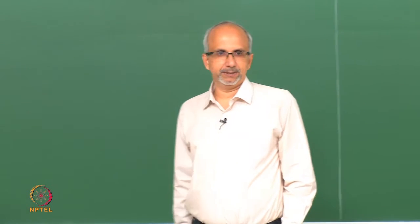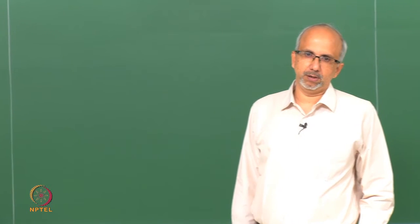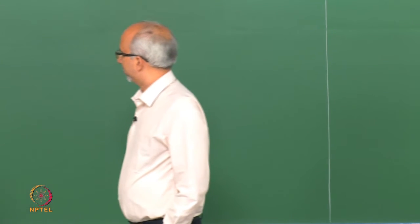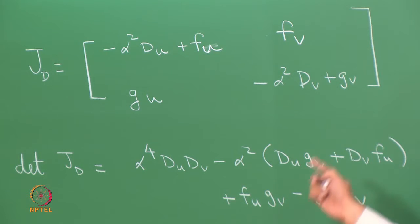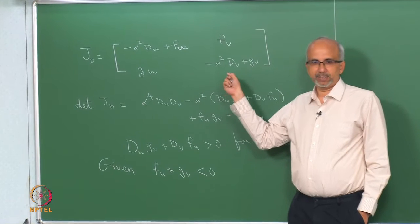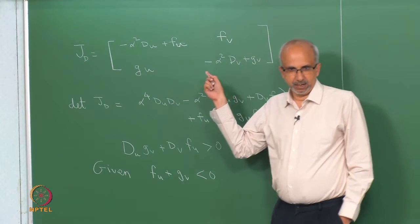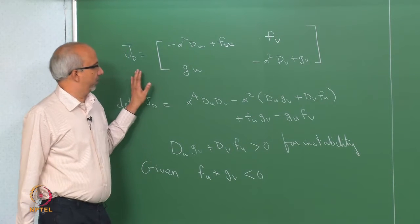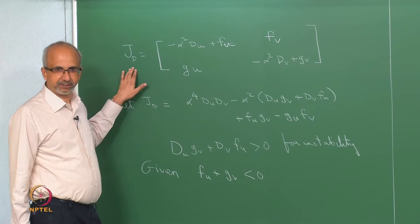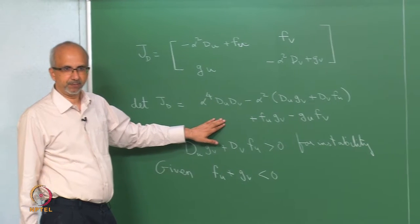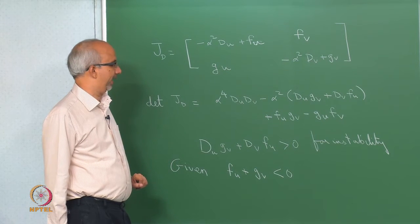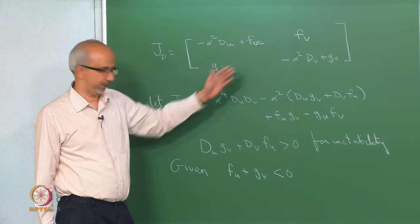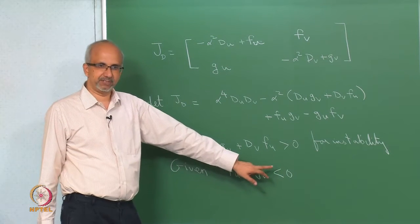What we will do in today's lecture is continue the discussion on Turing patterns which we started yesterday. Towards the end of the last class, we had found that the Jacobian matrix for the reaction-diffusion system was given by this expression — this is when a finite diffusion coefficient is added to the system. The determinant of this matrix is fourth order in alpha, and we established that the trace of this matrix would always be negative because fu plus gv is negative.